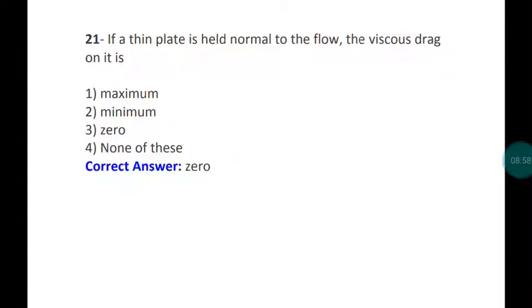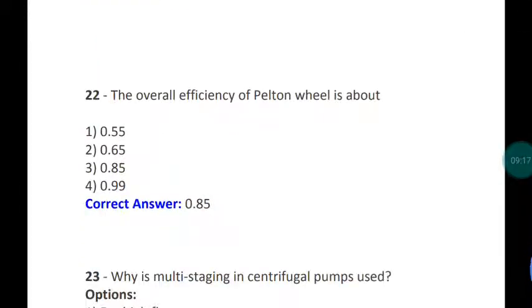Question twenty-one: The thin plate is held normal to the flow - the viscous drag is zero. Obviously viscosity comes out when it's parallel. So the plate is held normal to the flow, the viscous drag should be zero. Question twenty-two: The efficiency of a Pelton wheel is about 0.85 or 85 percent. Overall efficiency of the Pelton wheel.